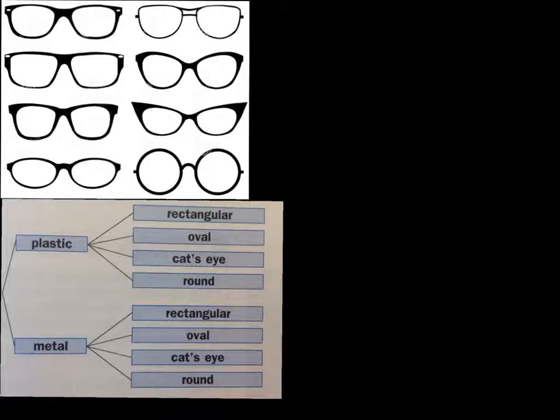First, we list the frame materials, plastic or metal. Then we list the frame shapes for each frame material: rectangular, oval, cat's eye, round for plastic, and the same for metal.